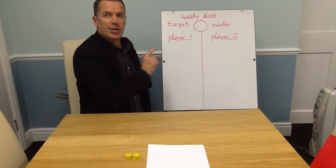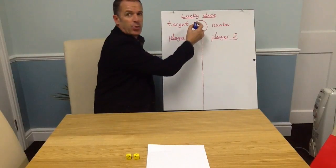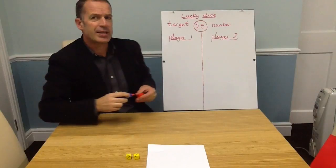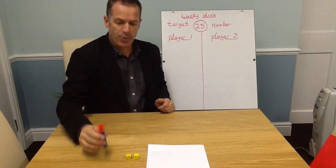So job number one is to choose a target number that you want to get to. I'm going to choose 25. The winner of this game is the first person to get 25 or over.